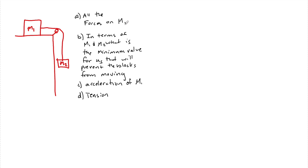What's up students? Today let's talk some midterm review. I have this box here, and I love this question because there aren't numbers — and you guys know how I feel about just being able to manipulate variables to find what we want. So we want to know: all the forces on M1 in terms of M1 and M2, the minimum value for mu static to prevent the box from moving, the acceleration of M1 — which is really the acceleration of the system — and also the tension on the string.